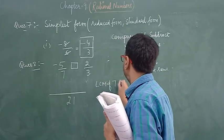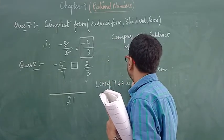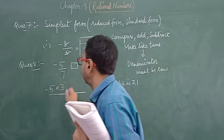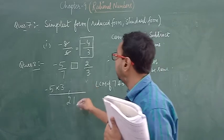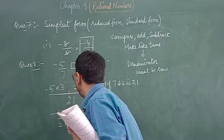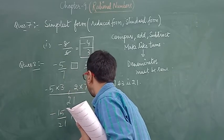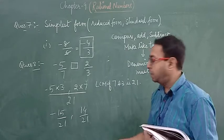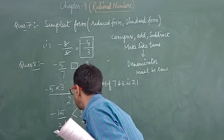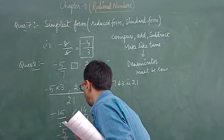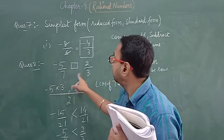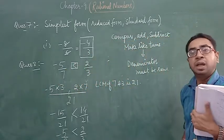LCM of 7 and 3 is 21. So: 21 divided by 7 is 3, giving minus 5 into 3 as the numerator; 21 divided by 3 is 7, giving 2 into 7. That gives minus 15 upon 21 and 14 upon 21. Obviously the positive term is bigger. So 2 by 3 is greater than minus 5 by 7. Positive is always greater than negative.